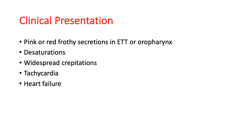How does pulmonary hemorrhage present? Usually the most common scenario is that the nurse looking after the baby calls you, concerned about increased oxygen requirement and pink or red frothy secretion in the ET tube if the baby is ventilated. On auscultation you might hear widespread crepitations, and on the monitor you may notice tachycardia and signs of heart failure.